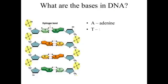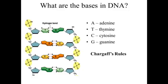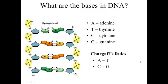The bases are adenine, thymine, cytosine, and guanine. Chargaff's rules — Chargaff was very important in helping Watson and Crick make their discovery — tell us that the amount of A equals T, meaning A and T form a hydrogen bond. This is a very weak bond that is very important. So A binds with T, and C binds with G.